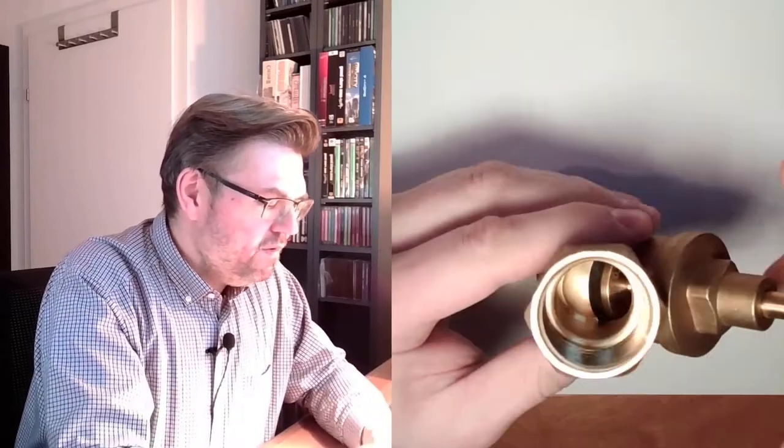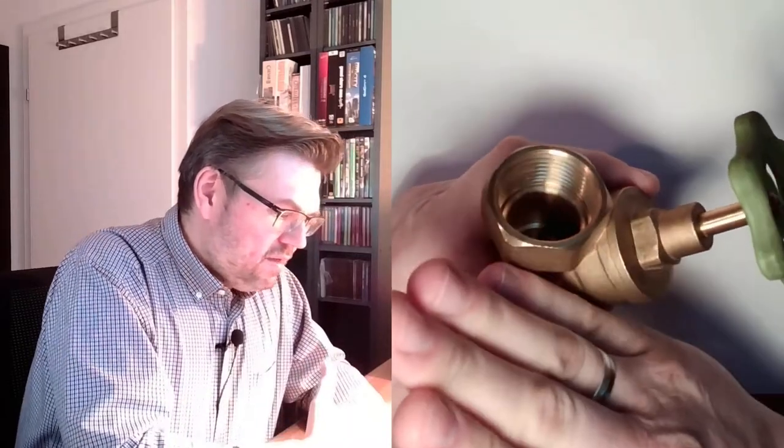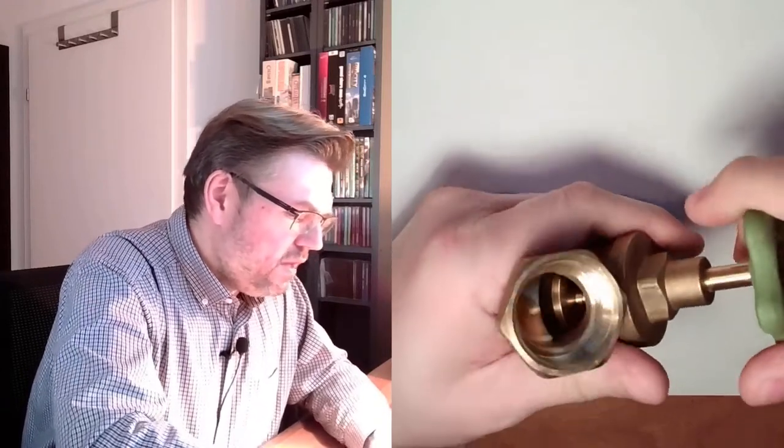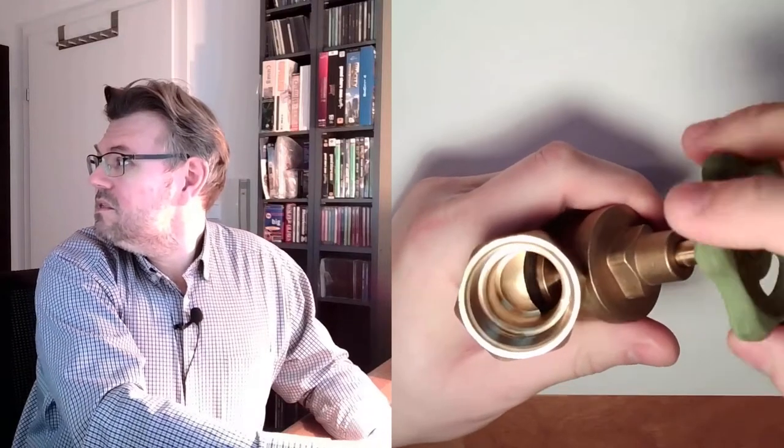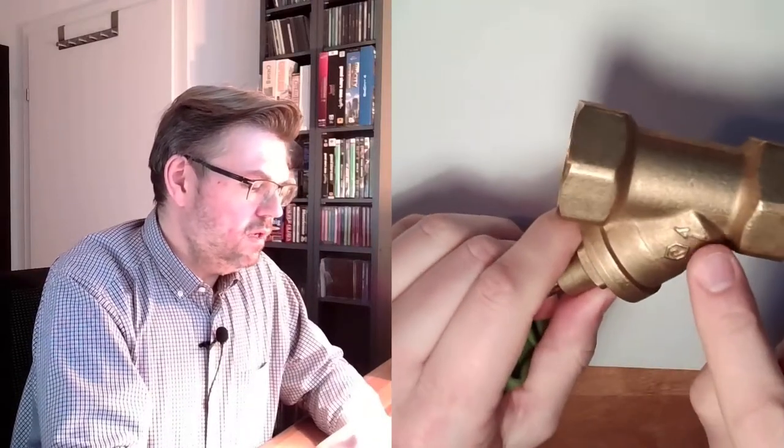This is called a poppet valve. If something is closing, is covering the hole and then really needs to be lifted off, by whatever mechanism is inside there. This is called a poppet valve. Hopefully it can be seen. There's always little signs on it in which direction the flow should be.